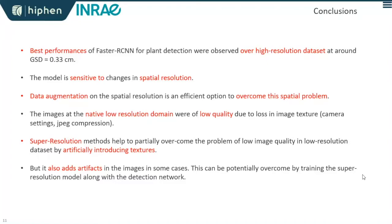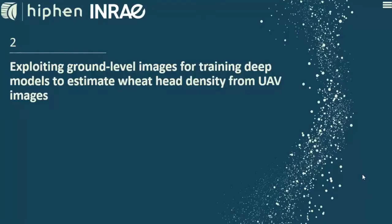To conclude the first study: the best performance is still observed on the high-resolution dataset. Faster RCNN is quite sensitive to spatial resolution. Data augmentation techniques can improve performance on low-resolution datasets. An additional issue was that camera acquisition settings were the same at both altitudes, which affected image quality. Super-resolution techniques can help improve performance on low-resolution data, but more studies are needed to avoid unwanted artifacts.